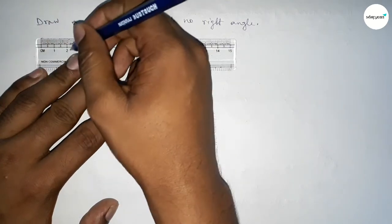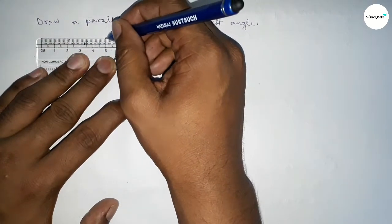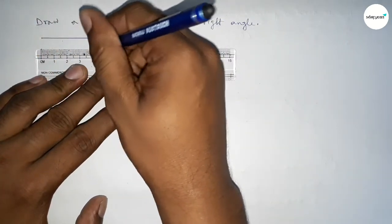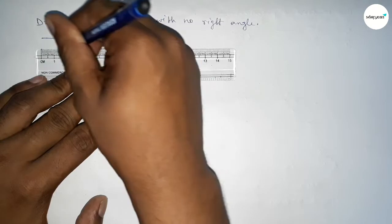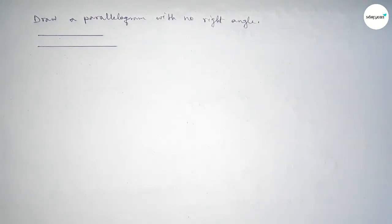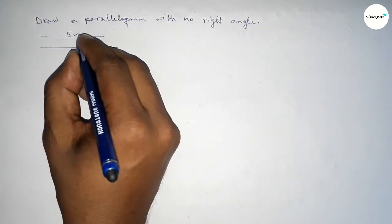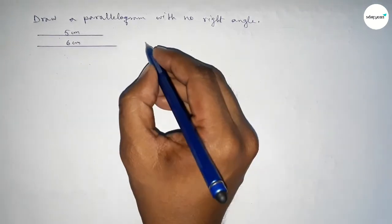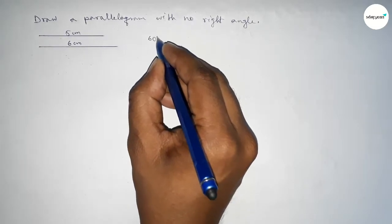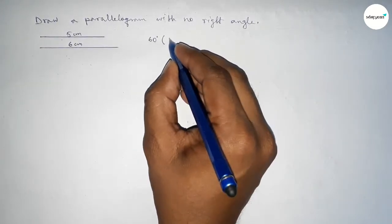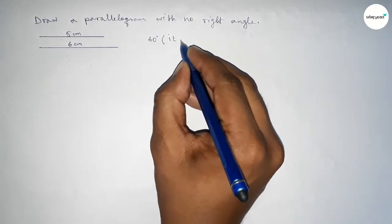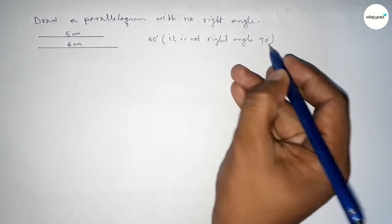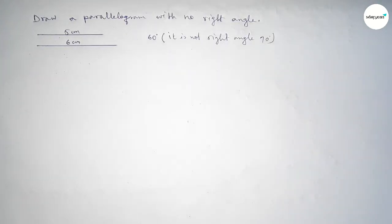First, taking a line of length 5 centimeters, then drawing another line of length 6 centimeters — you can take any length. So this is 5 centimeter and this one is 6 centimeter, and taking here an angle of 60 degrees, which is not a 90 degree right angle.